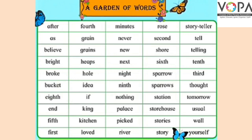'Eighth' — this is the ordinal form of eight. 'End' — e, n, d. End کے ماانا ہوتے ہیں ختم۔ 'Fifth' — this is also the ordinal form of five. 'First' — f, i, r, s, t. First is also the ordinal form of one.